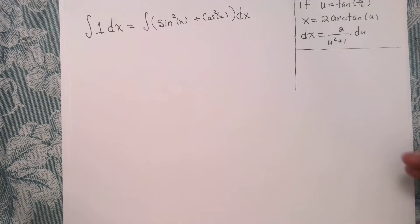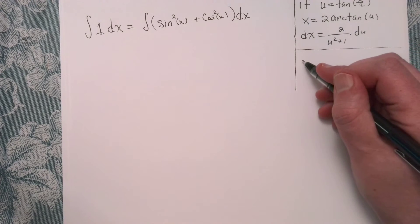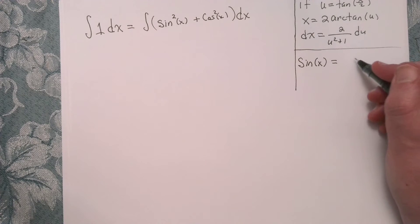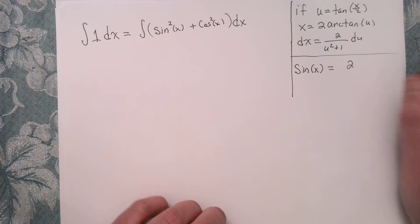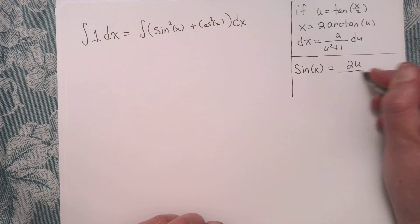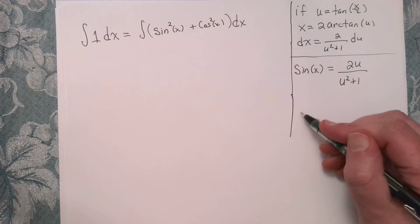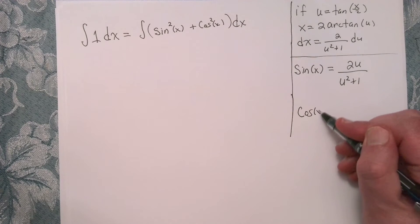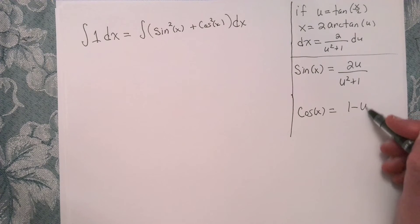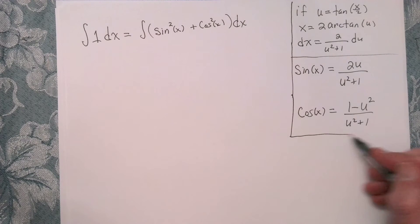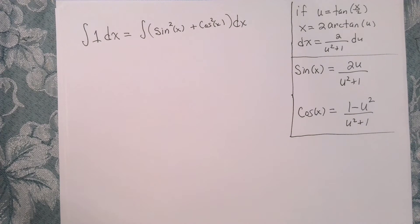And also from before, we're going to need the sine of x. So that's what did we say? That was 2u over u squared plus 1. And then also, we need the cosine, but we said that was 1 minus u squared over u squared plus 1. And now I think we're ready to go for it. We just have to be careful with our algebra.